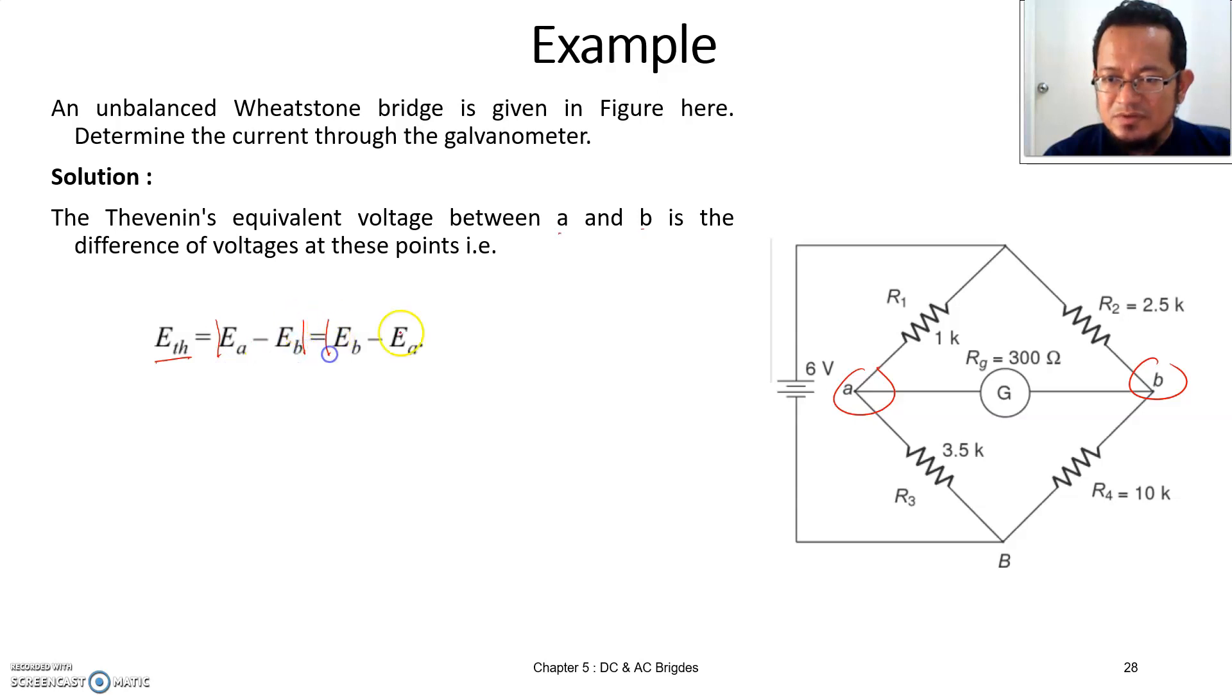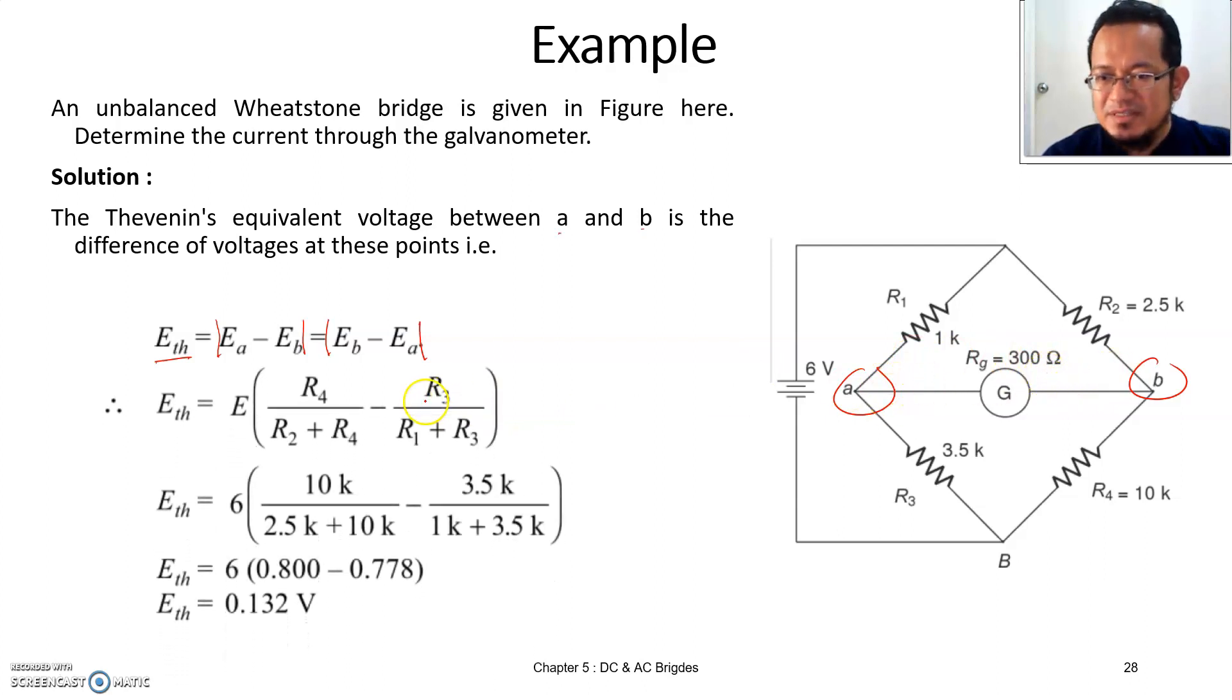So Thevenin voltage equals the voltage magnitude at point a minus voltage at b, or the magnitude of voltage b minus voltage a. It doesn't matter if you want to do a minus b or b minus a, it will be the same thing.